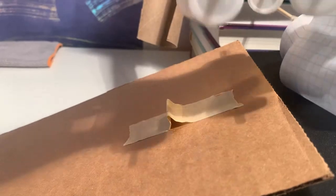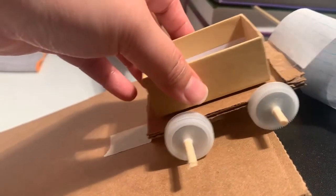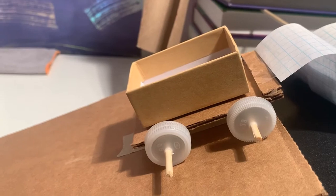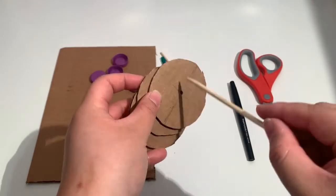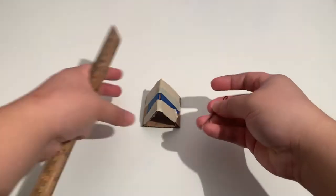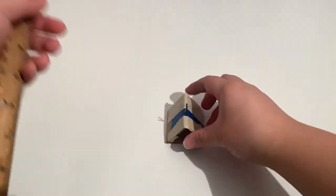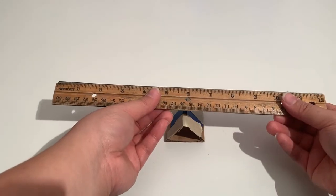A wedge is an object that tapers to a thin edge. It creates a sideways force in the direction it is pushed. Think of a door stopper. This is a wedge. It can be used as a tool to split, lift, or tighten and attach objects together. A wedge can also be attached to a handle, like an axe.